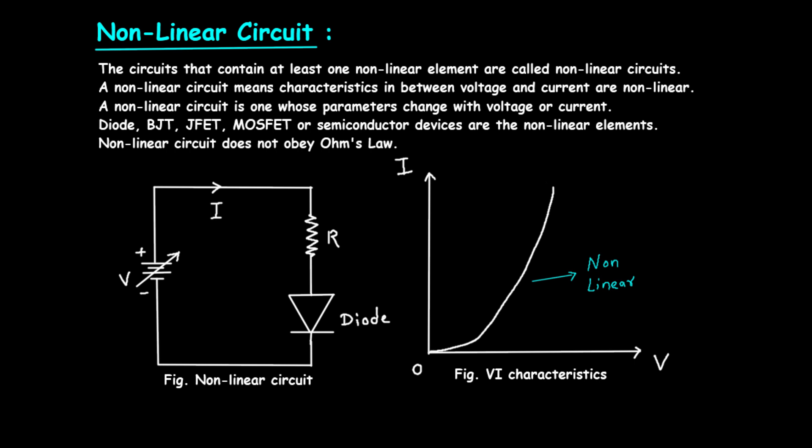The reason these elements are considered non-linear is that they do not obey Ohm's law. Ohm's law states that voltage, or V, is equal to current, or I, times resistance, or R. In non-linear elements, this simple relationship does not hold true because their resistance varies with the applied voltage or current.